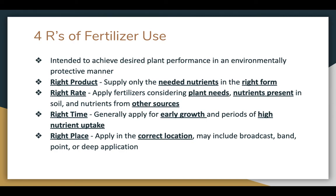The final thing we'll cover are the four R's of fertilizer use. These four R's are intended to achieve the desired plant performance in an environmentally protective manner. When we apply fertilizer, we want to see that it is the right product, at the right rate, at the right time, applied in the right place. The right product means supplying only those nutrients that are needed in the correct elemental form. The right rate means looking at plant needs, nutrients currently present in the soil, and nutrients available from other sources — so we don't over-apply or under-apply. The right time means applying when plants need the nutrients, typically early growth or other periods of high nutrient uptake. The right place refers to whether it's broadcast on the soil, banded, point application, or deep application — that will depend on the plant and the fertilizer.